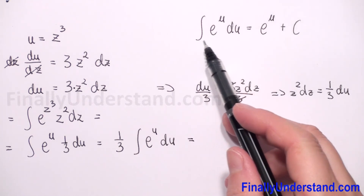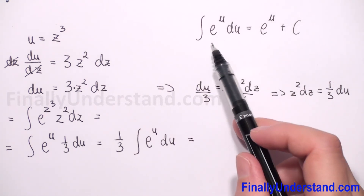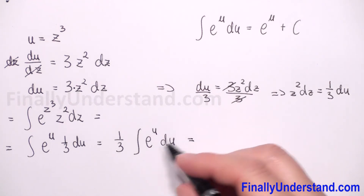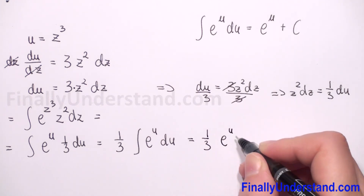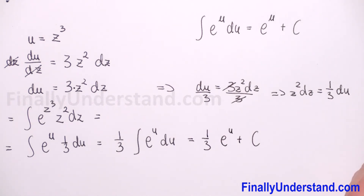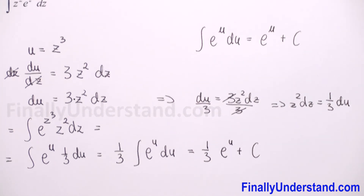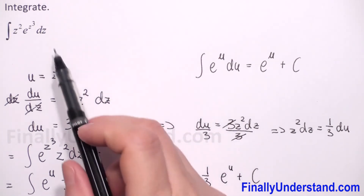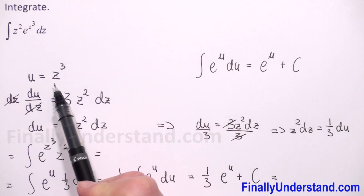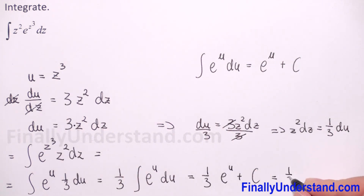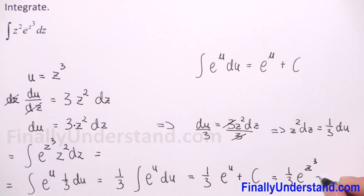Now we have exactly the same formula. We know that this integral equals e to the power u, so the result is one-third times e to the power u plus constant c. We solved the integral with respect to u, but we have an integral with respect to z, so we now have to come back to our substitution: u is equal to z cubed. Therefore, our final solution is one-third e to the power z cubed plus c.